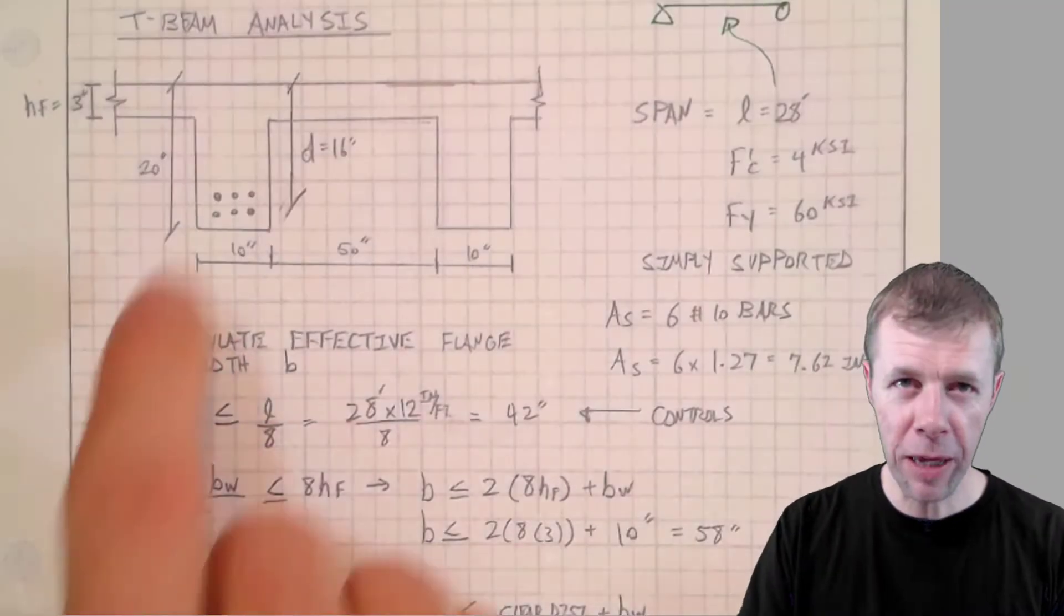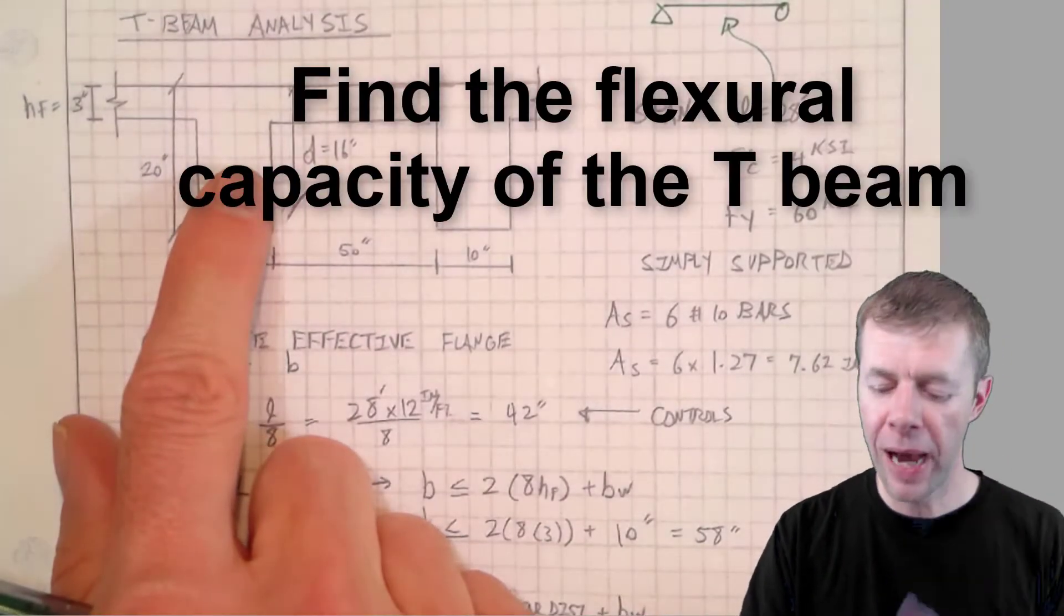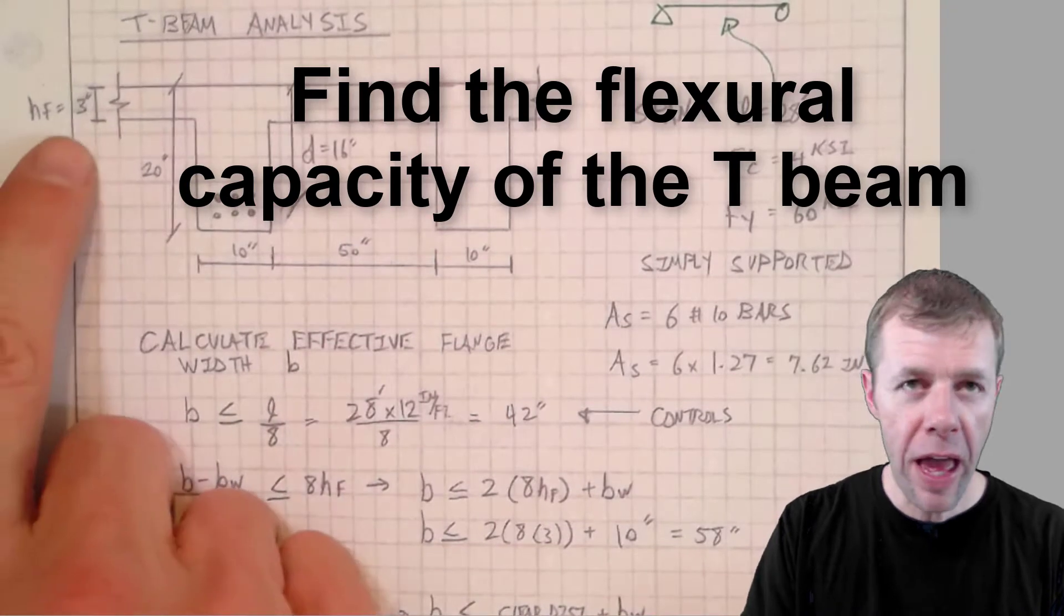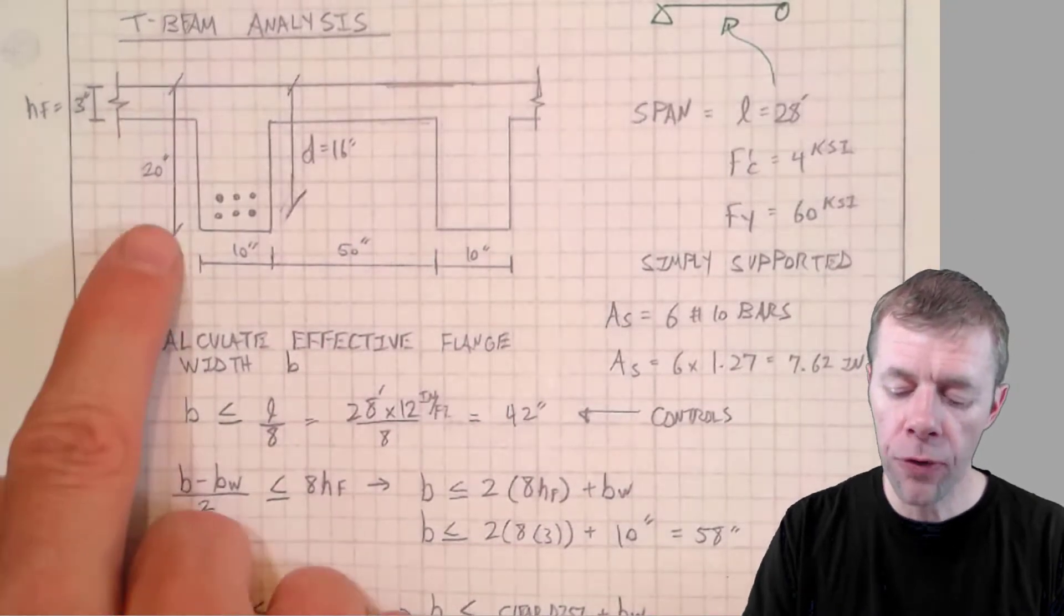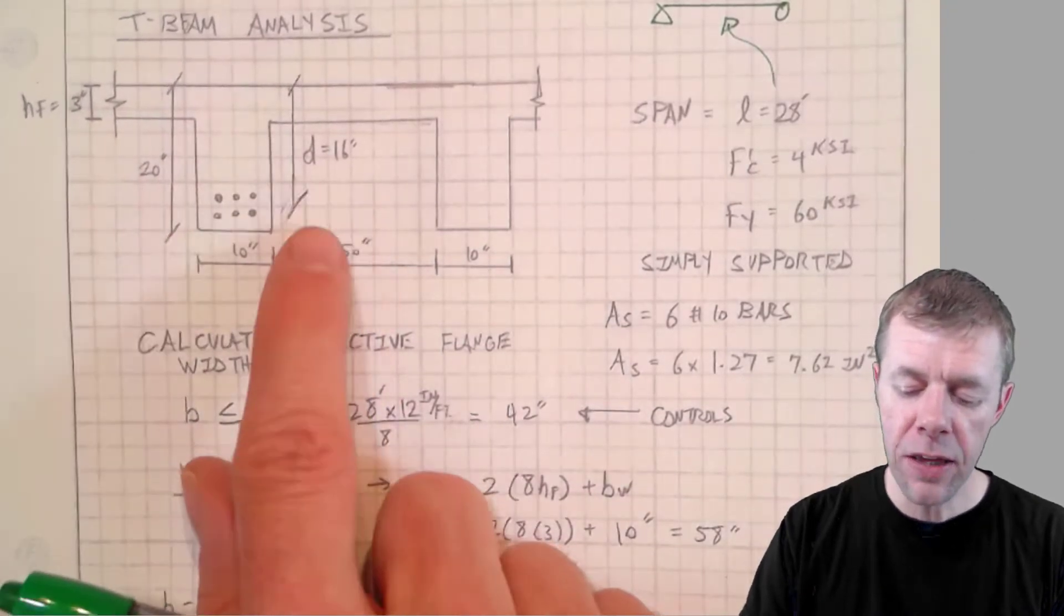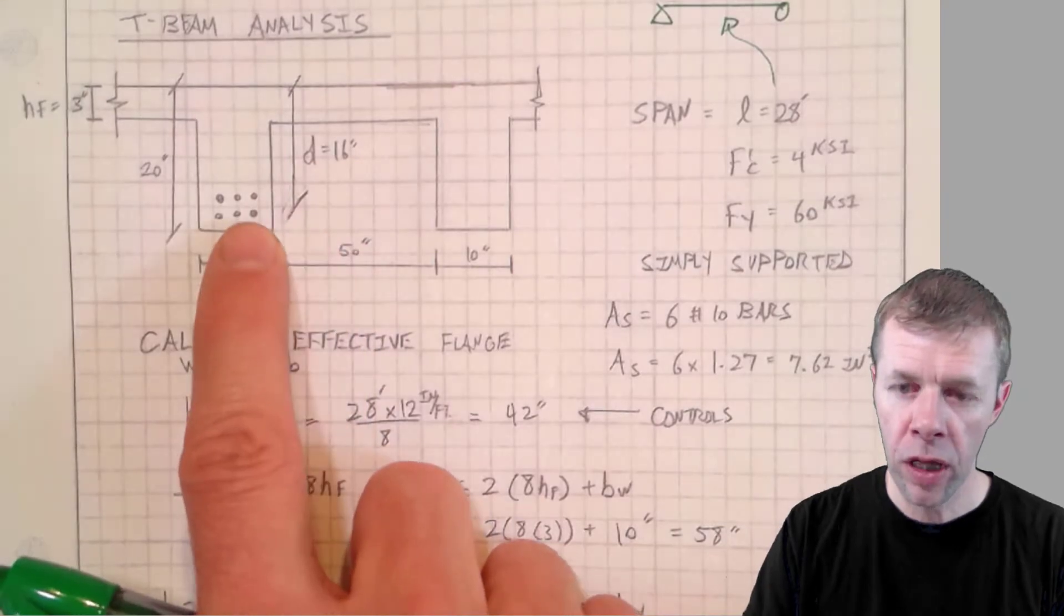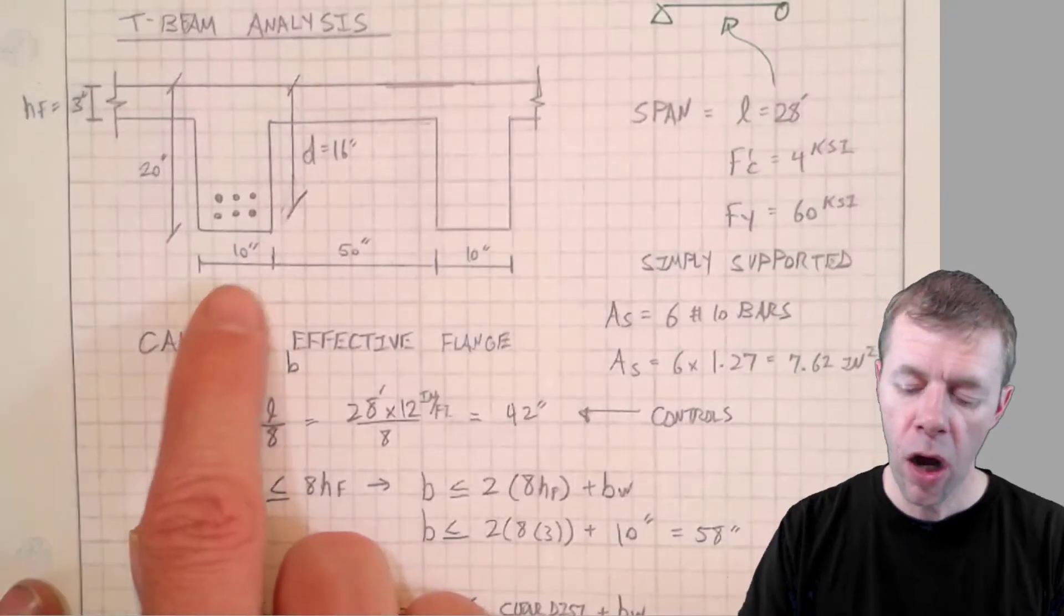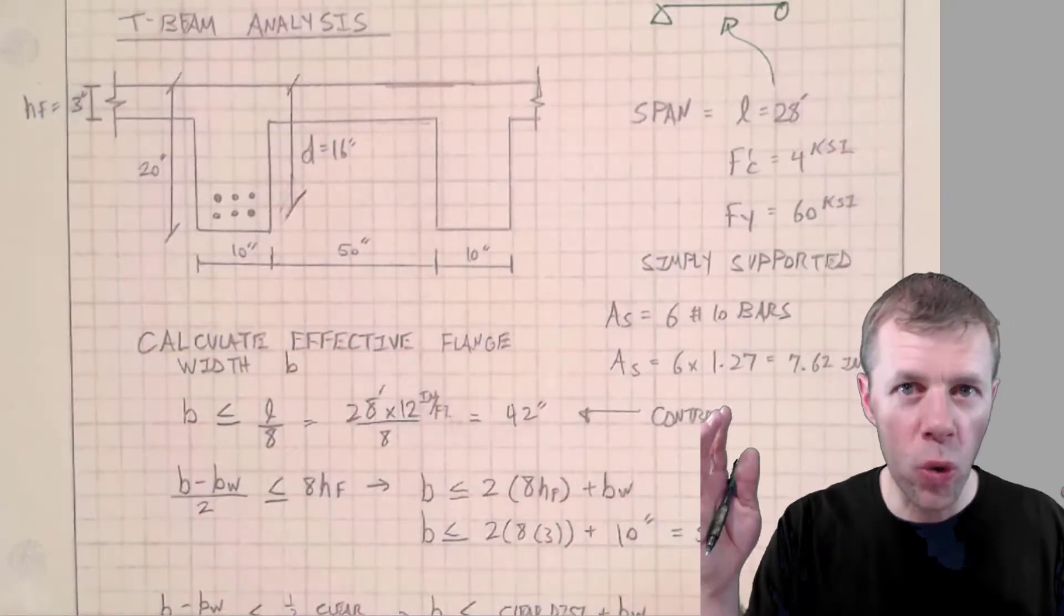In this problem we've got a T-beam and we want to find the capacity of it. We're given the height of the flange, the total depth, the D, the distance to the centroid of the steel from the compression fiber, our width, our spacing, we've got all kinds of cool stuff.